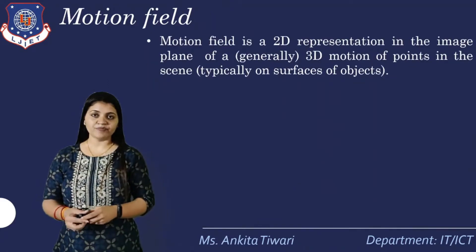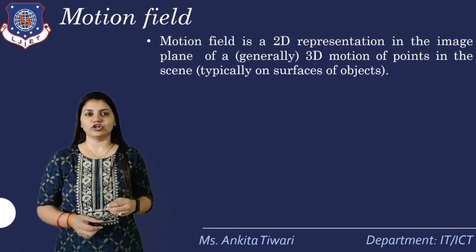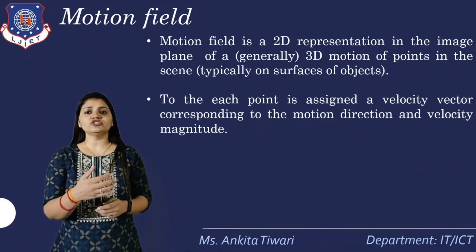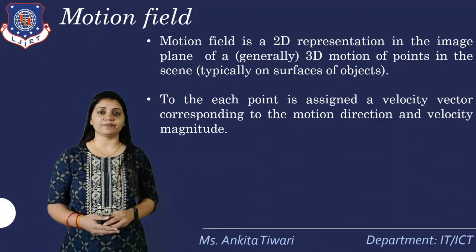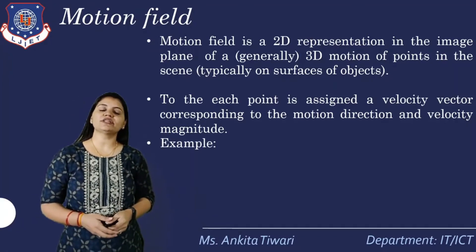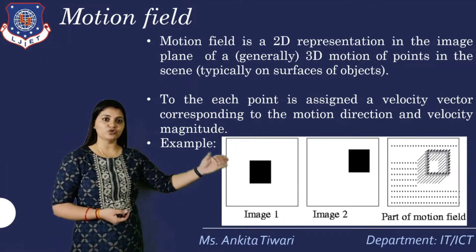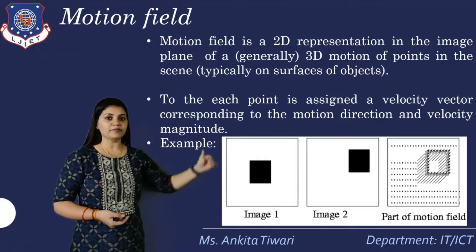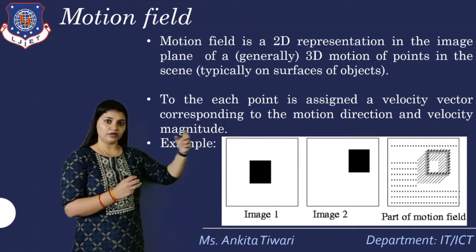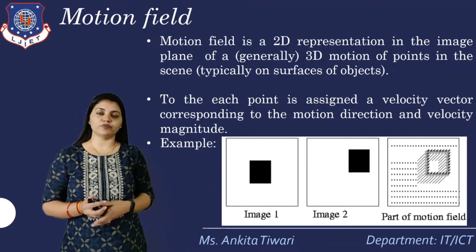What is a motion field? A motion field is a 2D representation in the image plane of the 3D motion of points in the scene, typically on the surface of objects. To each point is assigned a velocity vector V corresponding to the motion direction and velocity magnitude. For example, how motion is captured: we have image 1, image 2, and a part of the motion field — the image has changed from image 1 to image 2, and the distance covered is the part of motion.